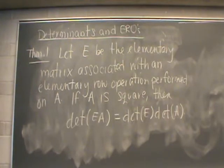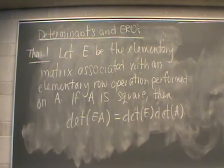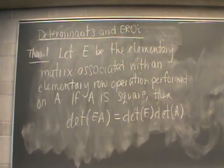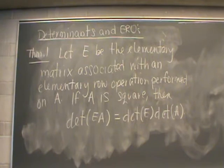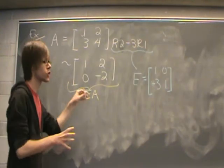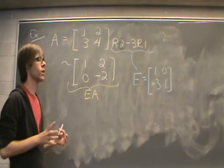Here is how the magic happens — it all comes down to theorem number 1. If E is the elementary matrix associated with an elementary row operation that we perform on A, and A is a square matrix, then the following equation holds true. The determinant of the matrix we get from performing that elementary row operation — that matrix is EA — equals the determinant of the elementary matrix times the determinant of our original matrix A. I'd like to show you a couple of examples to help illustrate what theorem 1 is talking about.